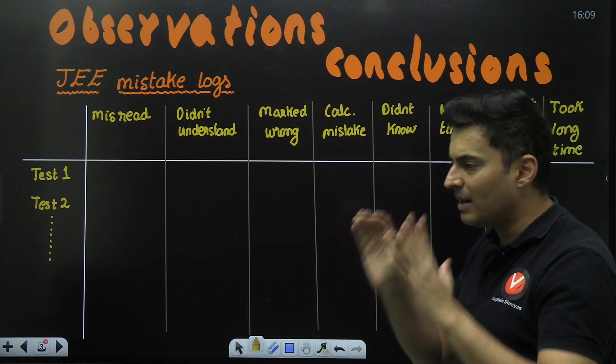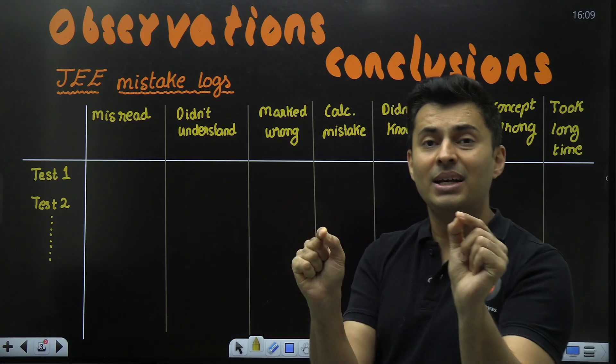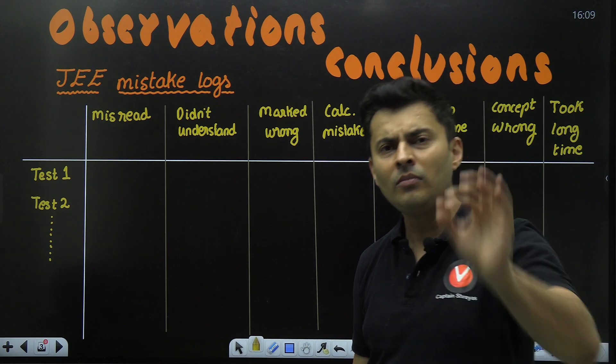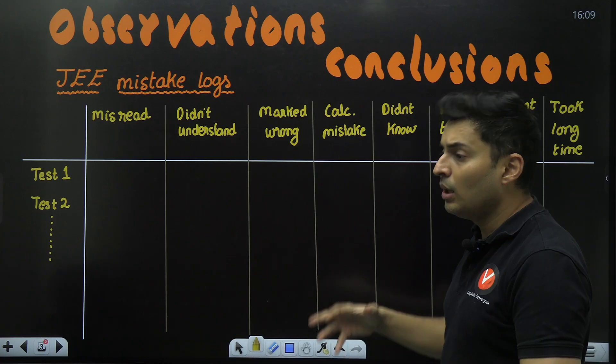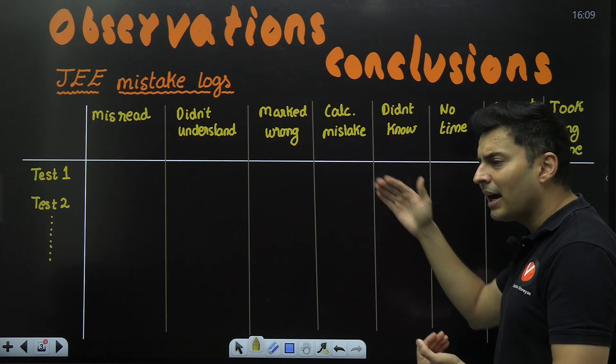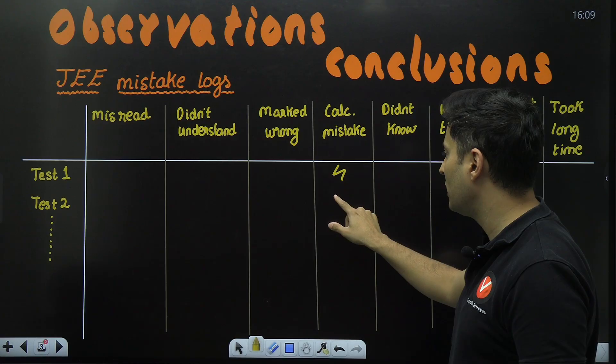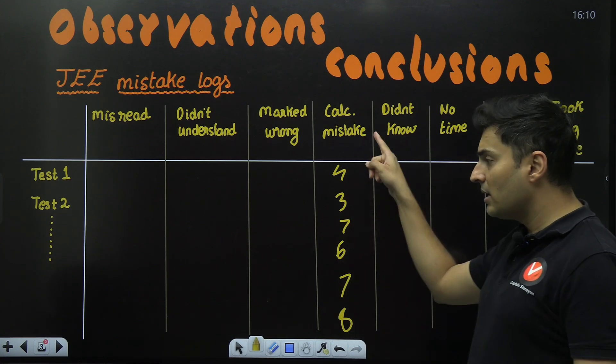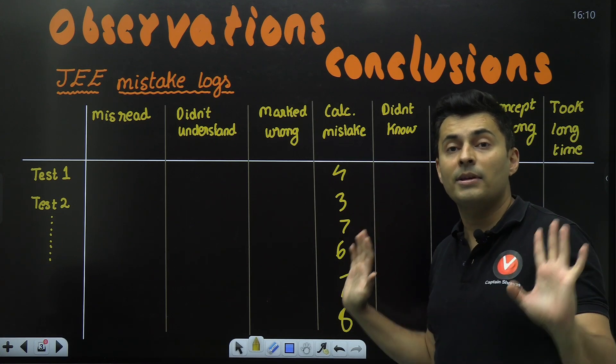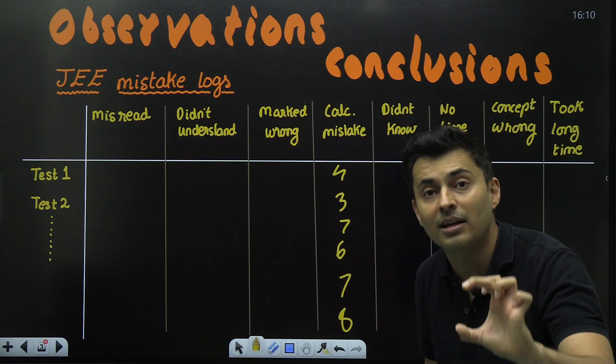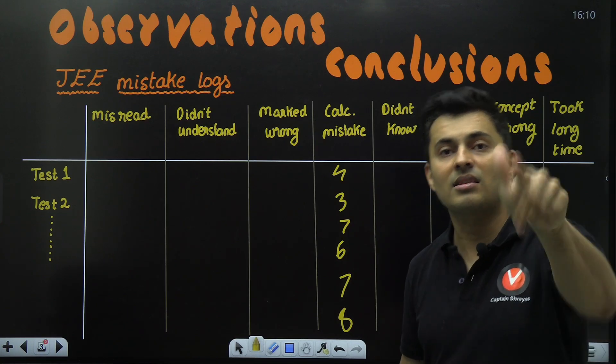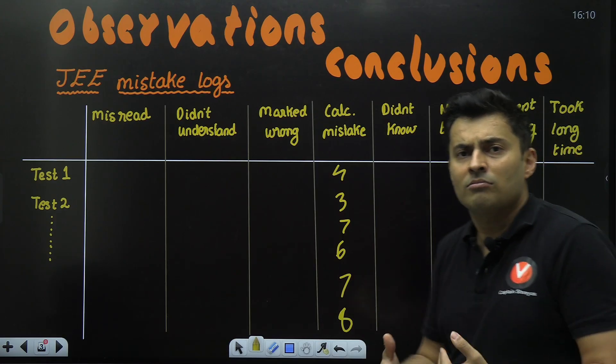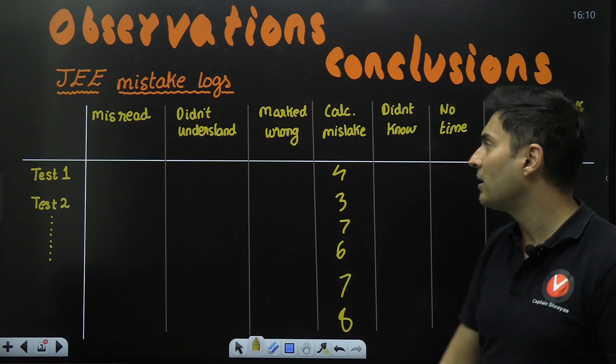I'll tell you why: silly mistake is the most common excuse. 'Oh sir, silly mistake, silly mistake.' What is this silly mistake? Why did it happen? Root cause analysis is needed. That's why in this table I've kept only those parameters which are pinpointing and strategically analyzing where we are going wrong.